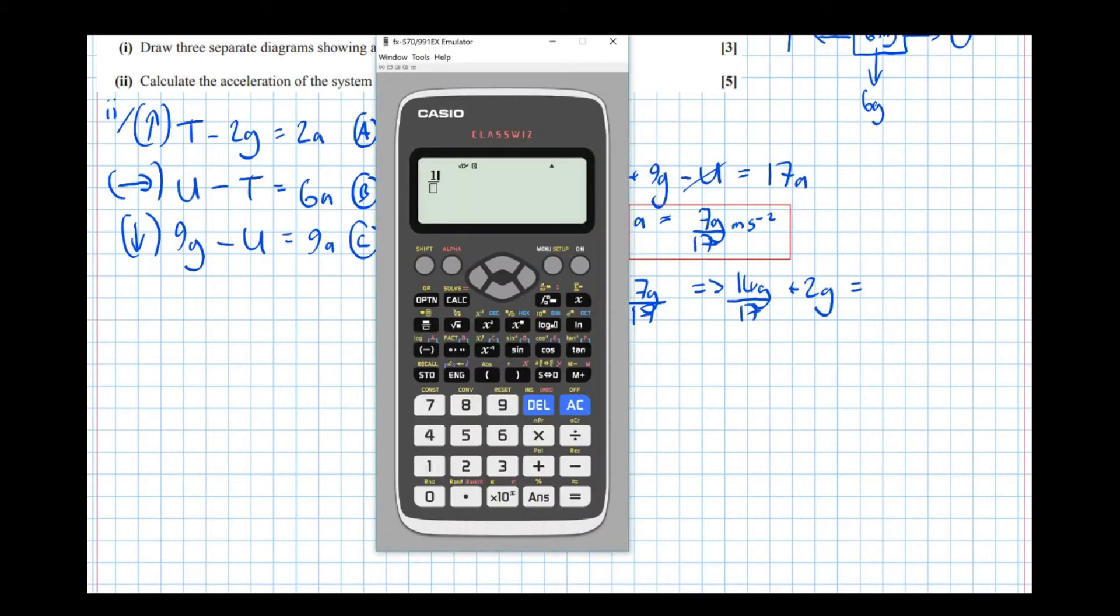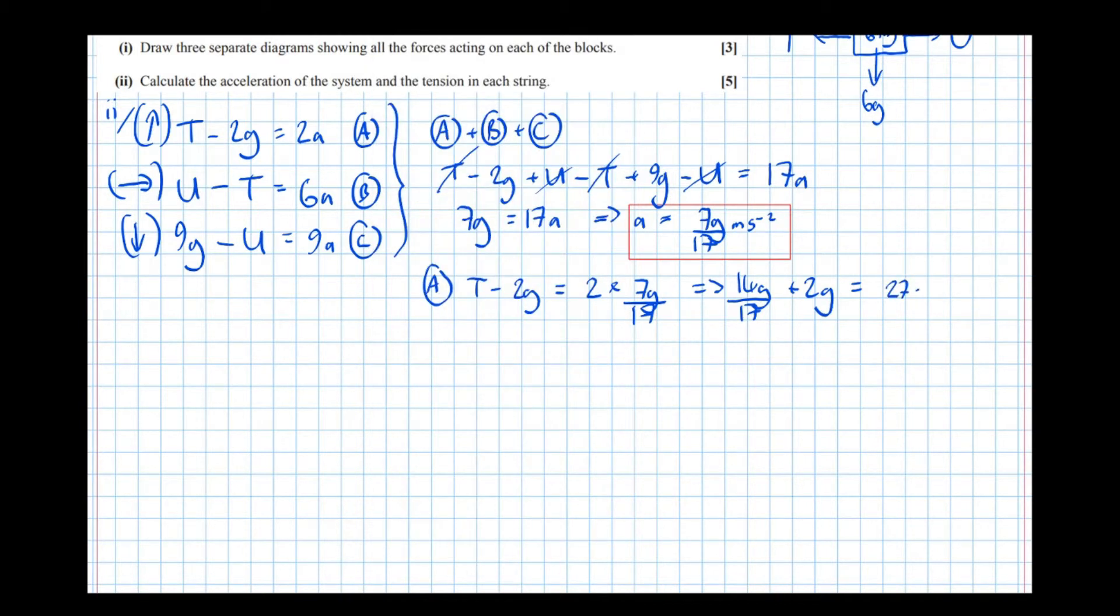And pop it in the calculator. So 14 times 9.8, 14g over 17, plus 2 lots of g, 2 lots of 9.8, equals 27.7, 27.7 newtons to 3 significant figures. And let's put a box around the answer again. Always make the answers prominent. So that's that tension there.